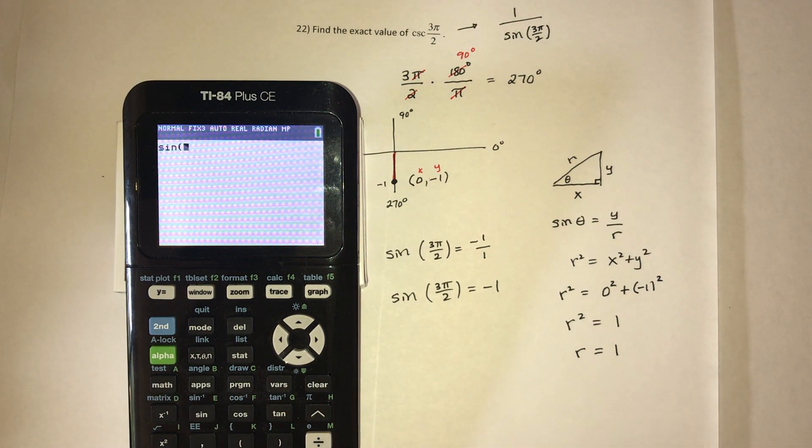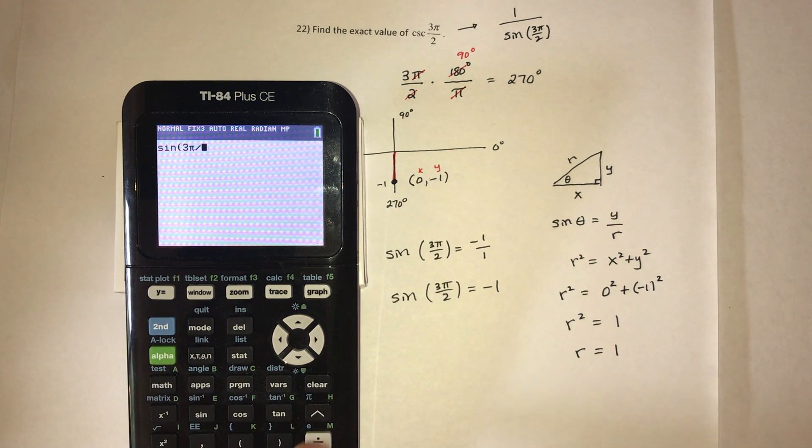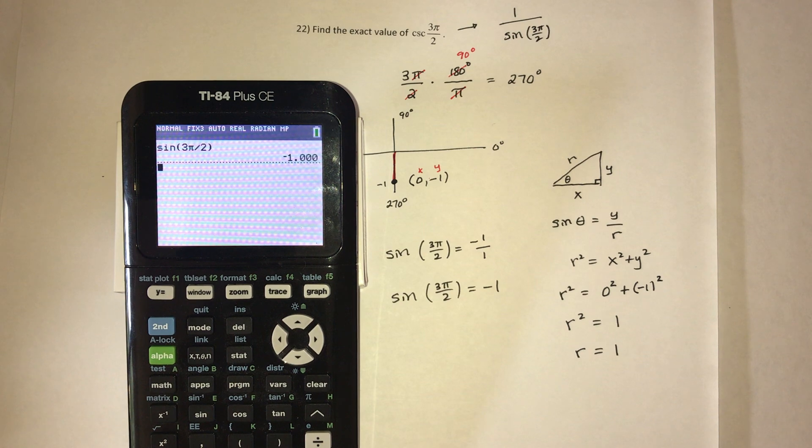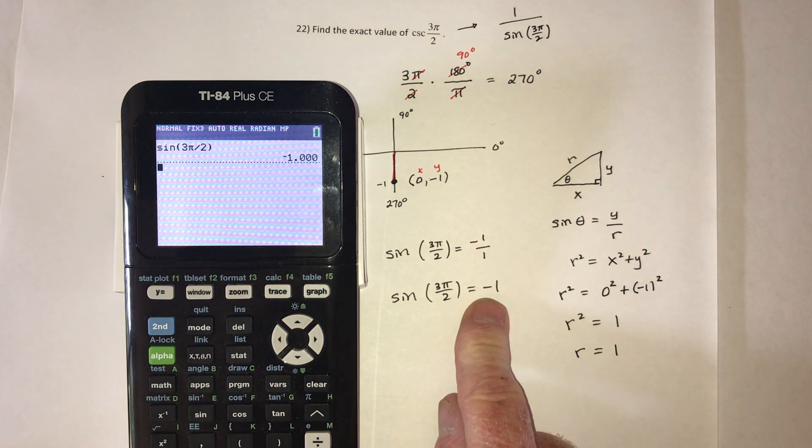How much is sine of 3π, then put second pi over 2. And it equals negative 1. Oh, happy day, I got this one right.